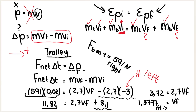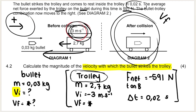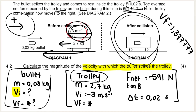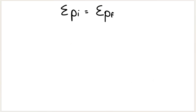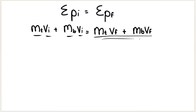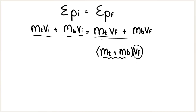What I've found is the final velocity of the bullet and trolley after the collision — but that's not what the question wanted. The question wants the initial velocity of the bullet. Now, using the final velocity I just calculated, I can substitute that into the conservation of momentum formula. You always start with the sum of initial momentum equals the sum of final momentum. You can combine the final masses in a bracket with the final velocity outside, because their masses combine and they travel with the same final velocity.